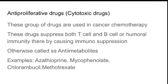The next category is anti-proliferative drugs, otherwise called cytotoxic drugs, which are mainly used in cancer chemotherapy. These drugs suppress both T-cell and B-cell immunity, so immunosuppression is very significant — patients receiving these drugs must be carefully monitored for infections. They are also called anti-metabolites. Examples are azathioprine (Imuran), mycophenolate, chlorambucil, and methotrexate — all popular anti-metabolites used in chemotherapy.